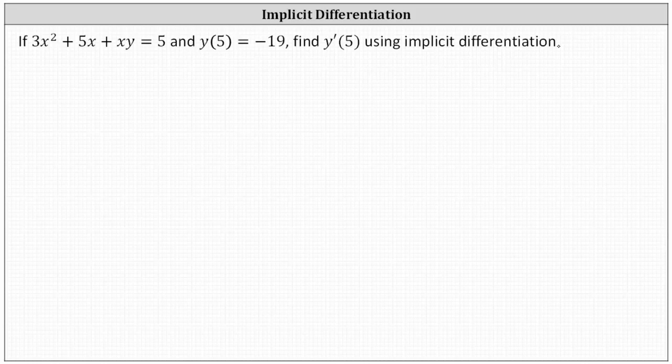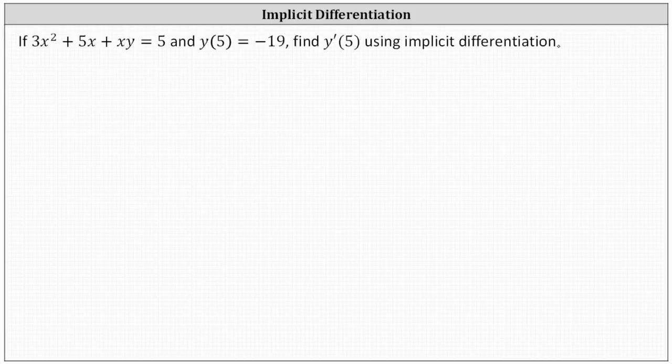If three x squared plus five x plus xy equals five, and y of five equals negative 19, we're asked to find y prime of five using implicit differentiation.